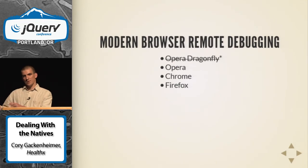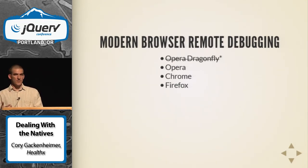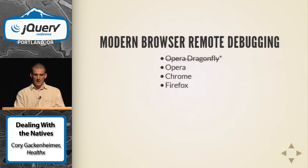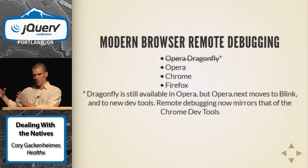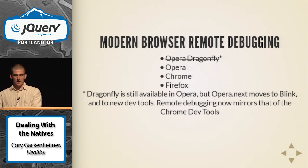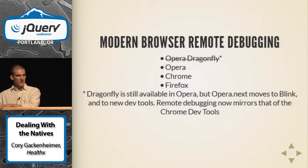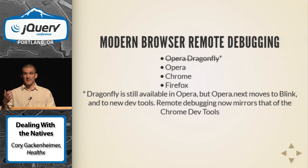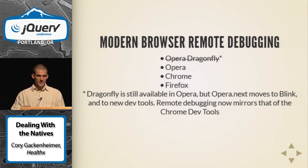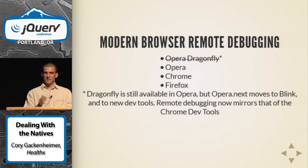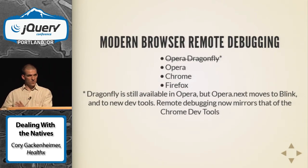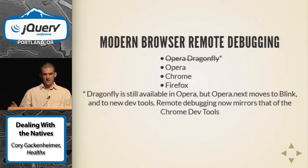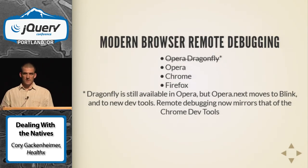Before you get to your native device, you can do a lot of remote debugging with modern browsers. Opera Dragonfly on the old Opera was great — you give it a port to listen on, open Opera Mobile on your phone on that same port, no USB required. Now Opera has moved to Chromium, so it's DevTools — basically an exact mirror of Chrome remote debugging. Firefox's new DevTools are also progressing well.